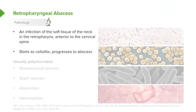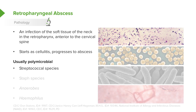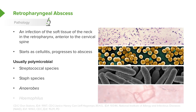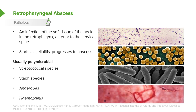Just like in a peritonsillar abscess, this is a polymicrobial process involving those same bacteria: specifically streptococcal species, Staph aureus, anaerobes, and H. flu — typically H. flu non-typable.